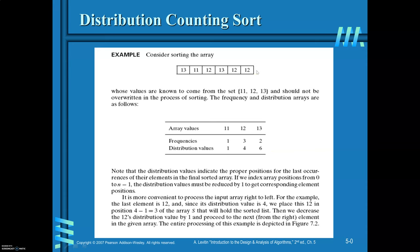Consider this array. The elements of the array are coming from the set {11, 12, 13}. Here, 11 is appearing only once, 12 three times, and 13 two times. You know already what kind of elements will be there in the array — it is falling in a particular range. Here, the range is 11 to 13; the upper limit is 13 and lower limit is 11. So, whenever you have elements like this, you can sort these elements of the array by distribution counting sort.